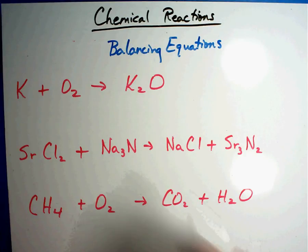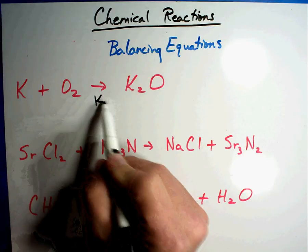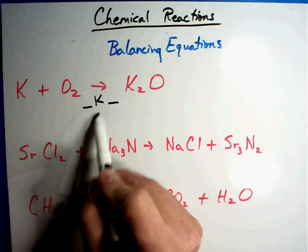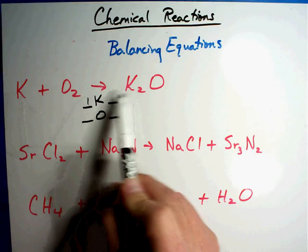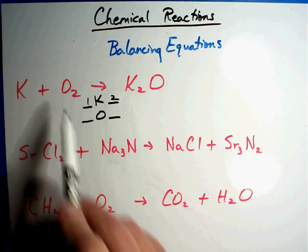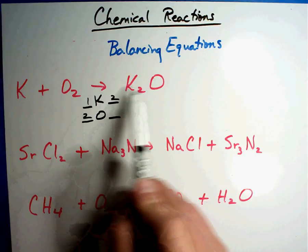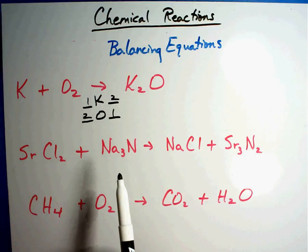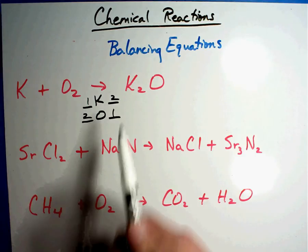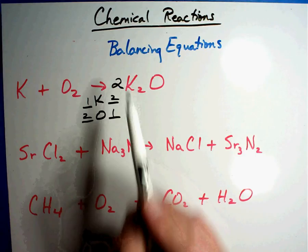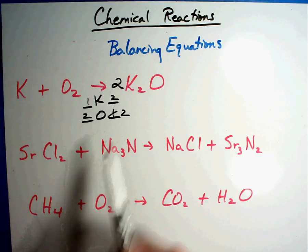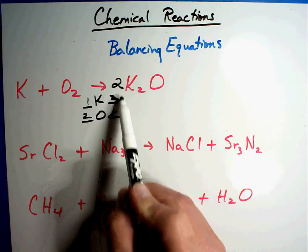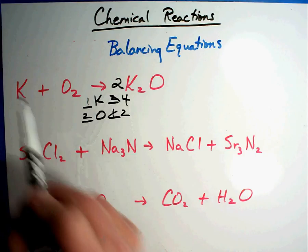Alright, balancing equations, let's see the answers that we get. We're going to count the K's, we're going to count the O's in this first example. There's one K here and there's two there, two oxygens and one oxygen. Well, let's see how we're going to fix this. Let's just start with the O's. To fix that, I've got to put a two here. Two times that one gives me two. That just messed up my K's, that's a four. So to fix that, I've got to put a four here.